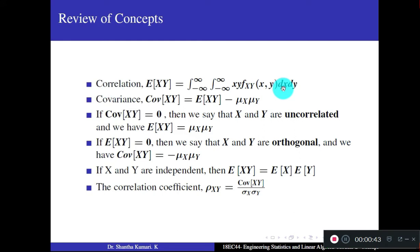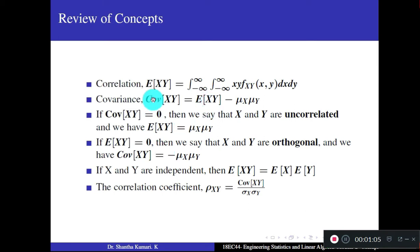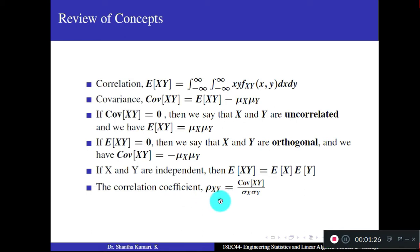The correlation formula: expectation of x·y. Covariance is correlation minus μx·μy. If covariance is 0, then expectation of x·y becomes μx·μy — these are called uncorrelated random variables. If expectation is 0, then covariance becomes minus μx·μy and x and y are orthogonal. If x and y are independent, expectation of x·y equals expectation of x times expectation of y, meaning covariance becomes 0. The correlation coefficient ρ(x,y) is covariance divided by standard deviation of x times standard deviation of y.